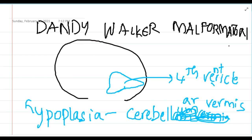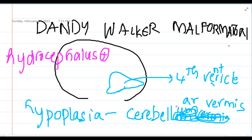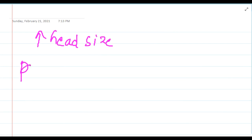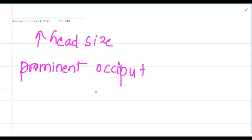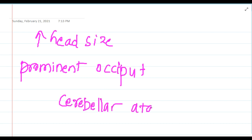The fourth ventricle is enlarged likely due to the hypoplasia of the cerebellar vermis — since the cerebellar structure is absent, the fourth ventricle increases in size. You will also see an enlarged posterior fossa with lambdoid inversion. Clinically, there is a rapid increase in head size with a prominent occiput, and due to absence or decreased amount of the cerebellar vermis, this results in cerebellar ataxia.